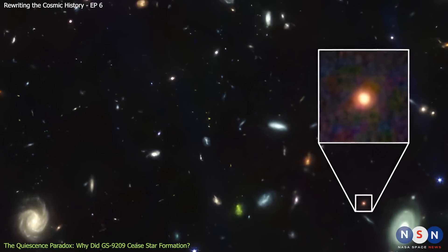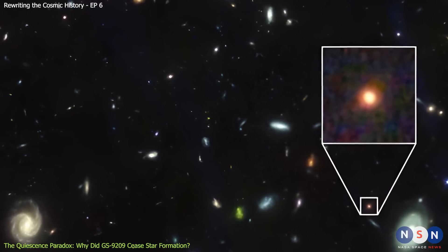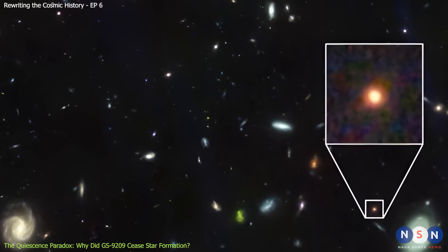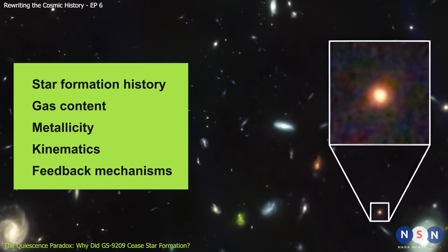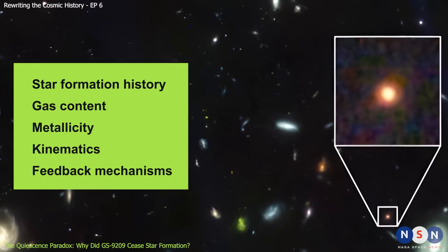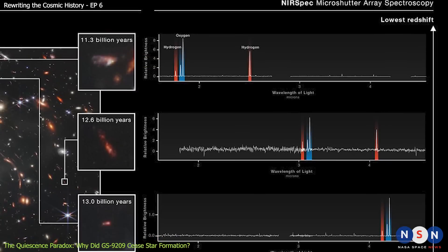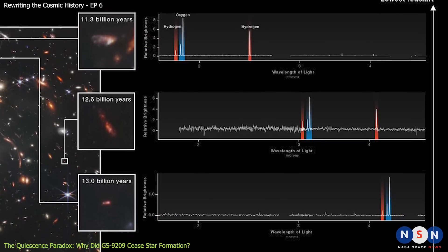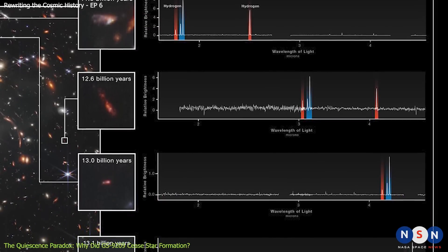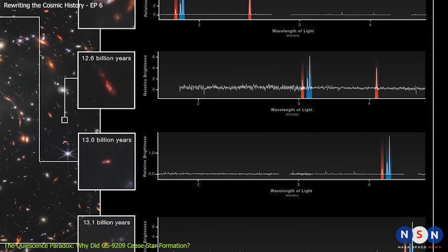By analyzing GS 9209's spectrum and morphology, astronomers can learn more about its star formation history, its gas content, its metallicity, its kinematics, and its feedback mechanisms. They can also compare it with other galaxies at different redshifts and ages to see how it fits into the bigger picture of cosmic evolution.